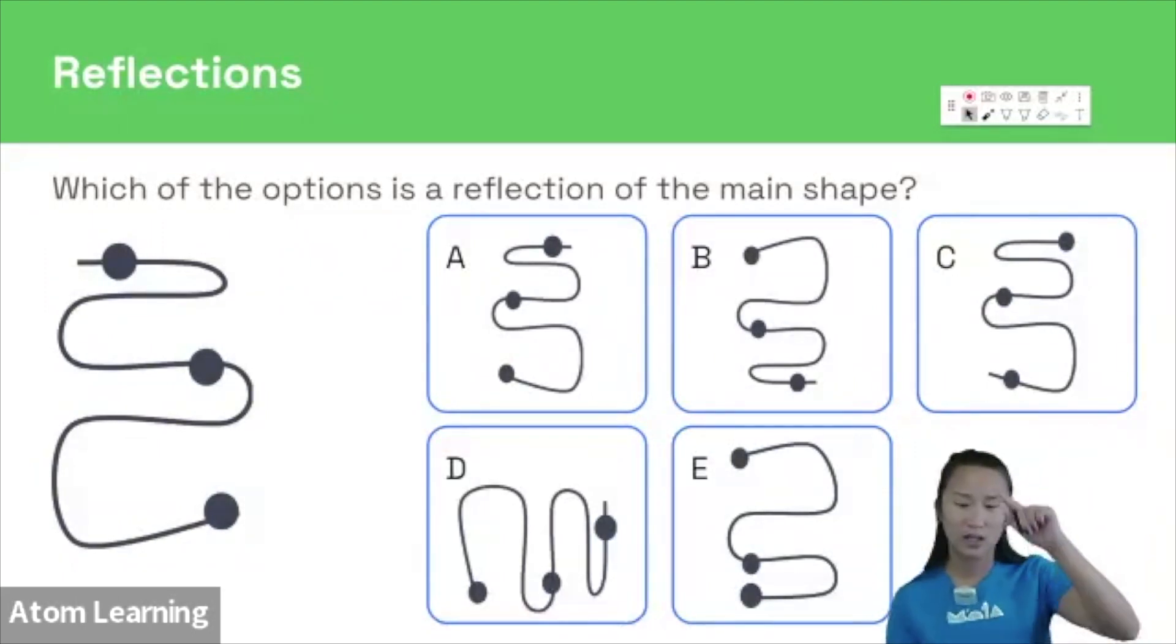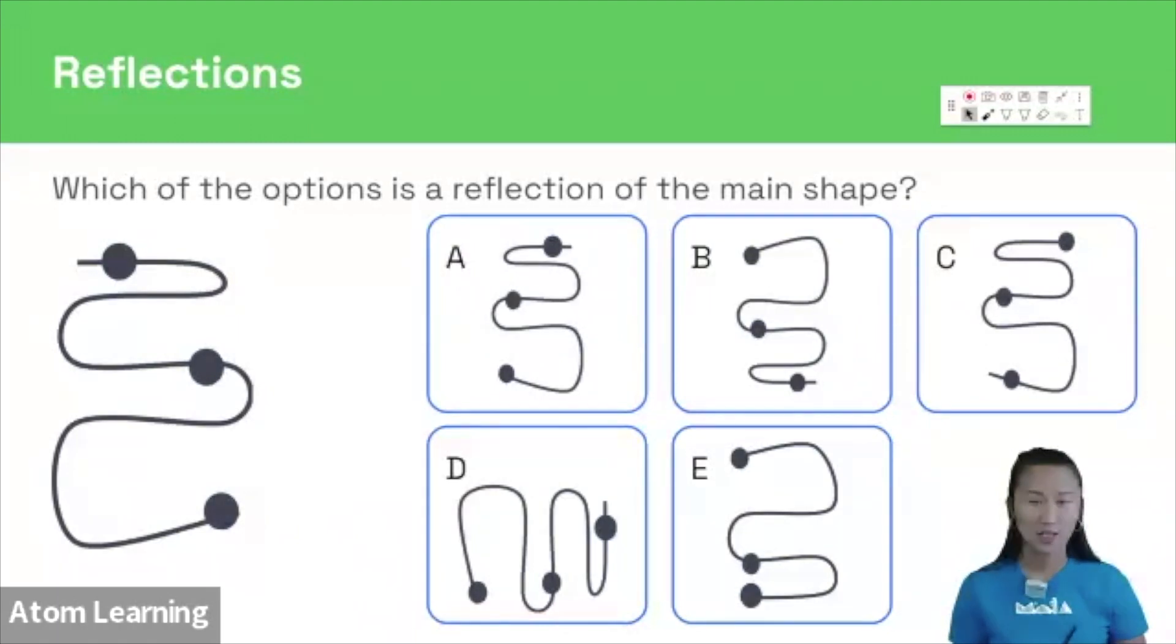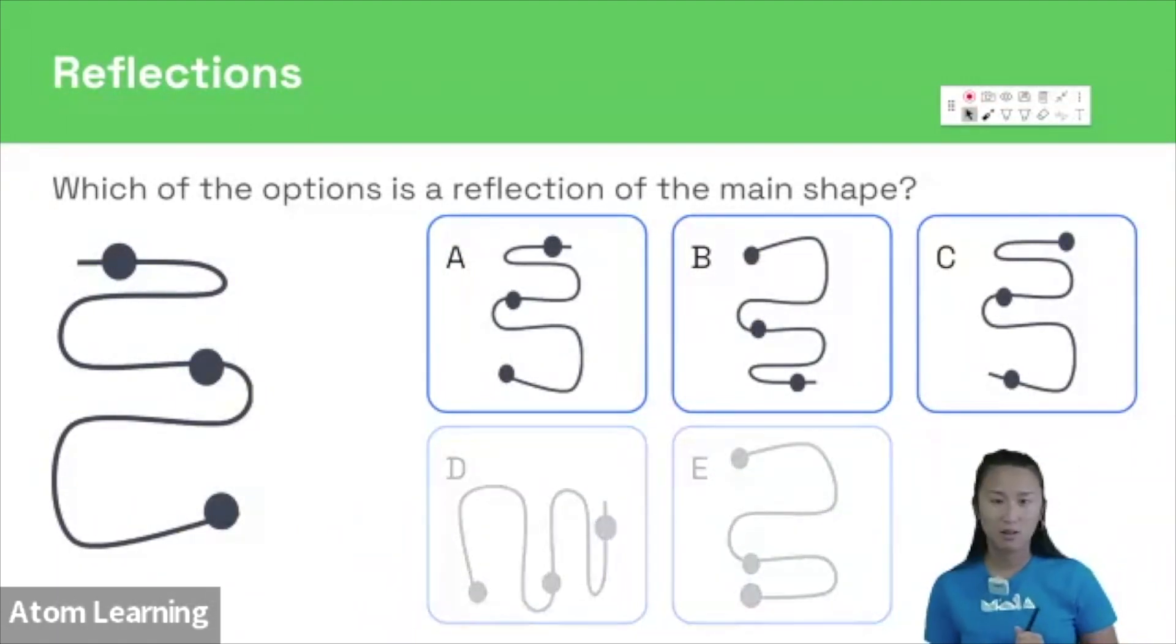We have a squiggly line made up with four bends and three small black circles. So let's start by eliminating some obviously wrong answers.